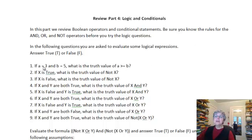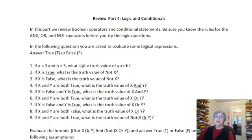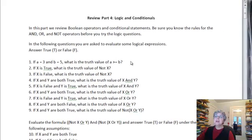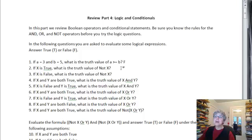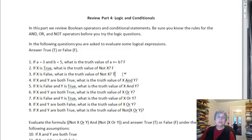If A equals 3 and B equals 5, what is the truth value of A greater than or equal to B? Well, A is less than B, so this is false. If X is true, what about NOT X? It's false. On the other hand, if X is false, then NOT X is true.